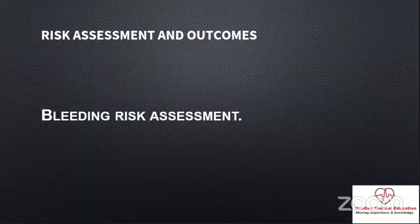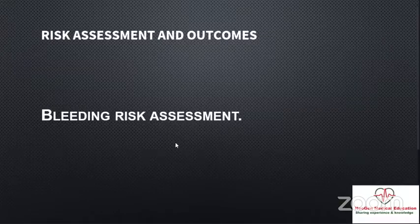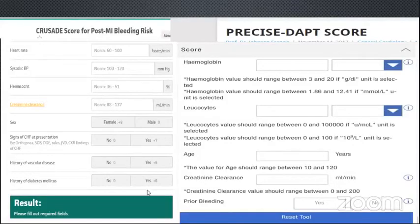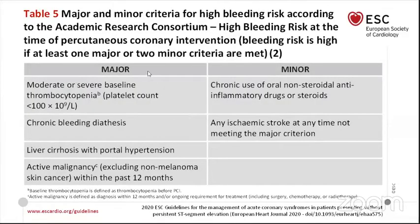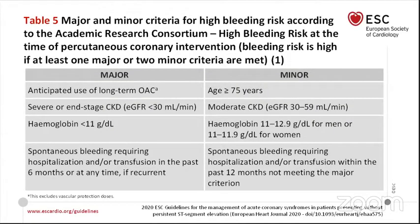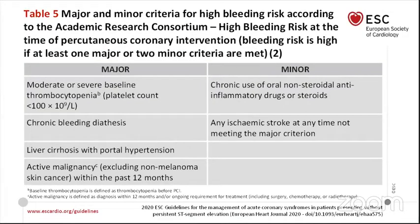Regarding bleeding risk: major bleeding risk is associated with poor prognosis in a STEMI or non-STEMI situation. The guideline recommends using scores like the CRUSADE score or PRECISE-DAPT score, or alternatively the ARC high bleeding risk score. The major and minor criteria for high bleeding risk according to ARC-HBR include patients already on anticoagulation therapy, severe renal failure, hemoglobin less than 11, spontaneous bleeding requiring hospitalization, and arterial infusion in less than six months. Additional criteria include thrombocytopenia and moderate baseline OCP — all available on the guideline website.